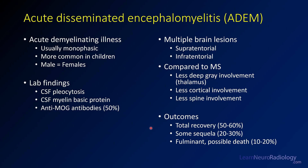ADEM is an acute, usually monophasic illness in younger patients, with equal distribution of males and females. Lab findings include pleocytosis in CSF, myelin basic protein frequently in CSF, and anti-MOG antibodies present a good fraction of the time. Lesions can be supratentorial or infratentorial. There tends to be some deep gray and thalamic involvement, with less cortical and subcortical white matter and less spine involvement. A little more than half of patients fully recover; others may have long-term sequelae, and death is possible in fulminant cases.